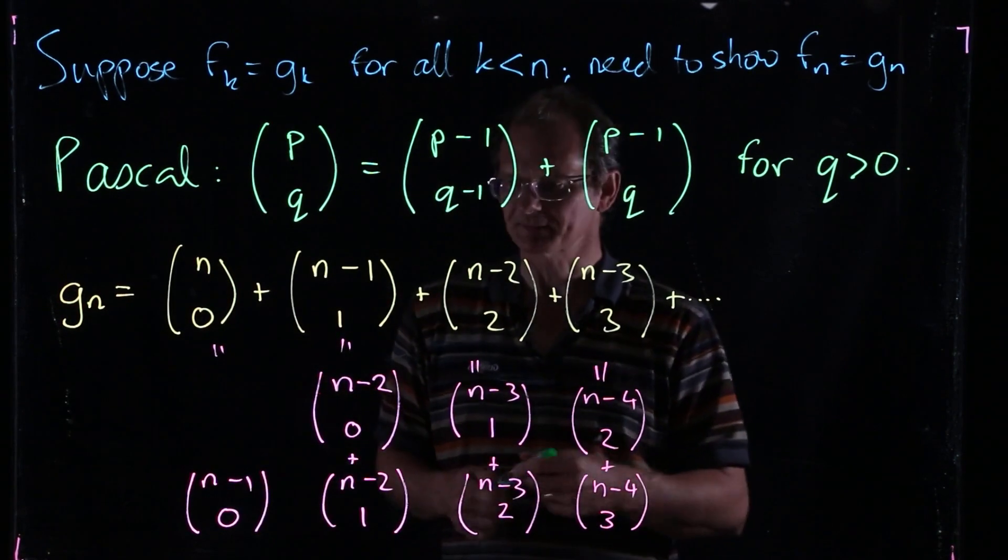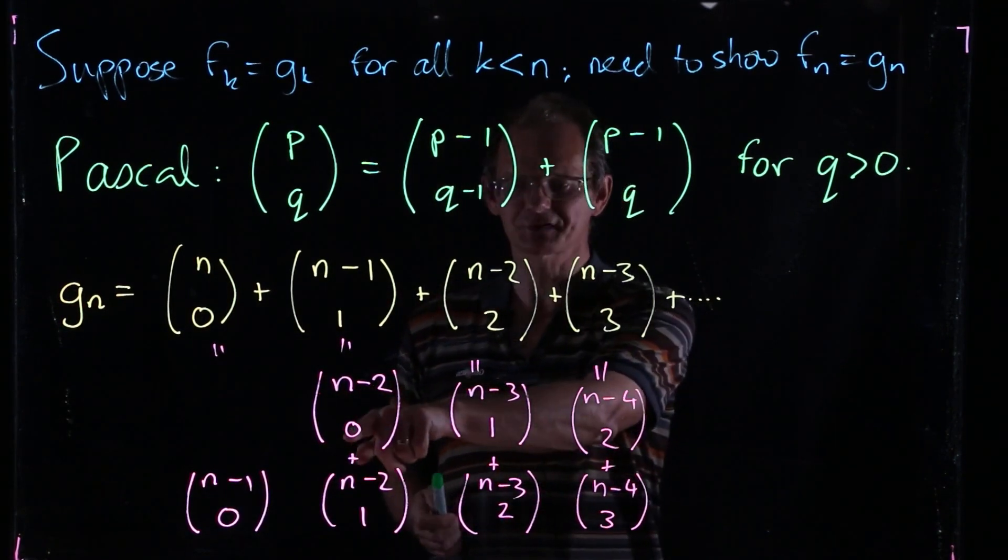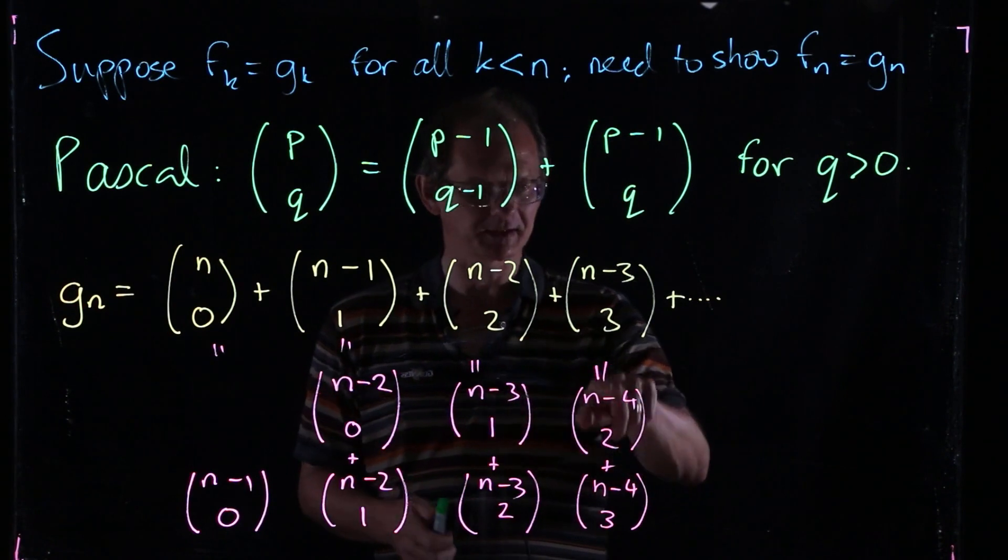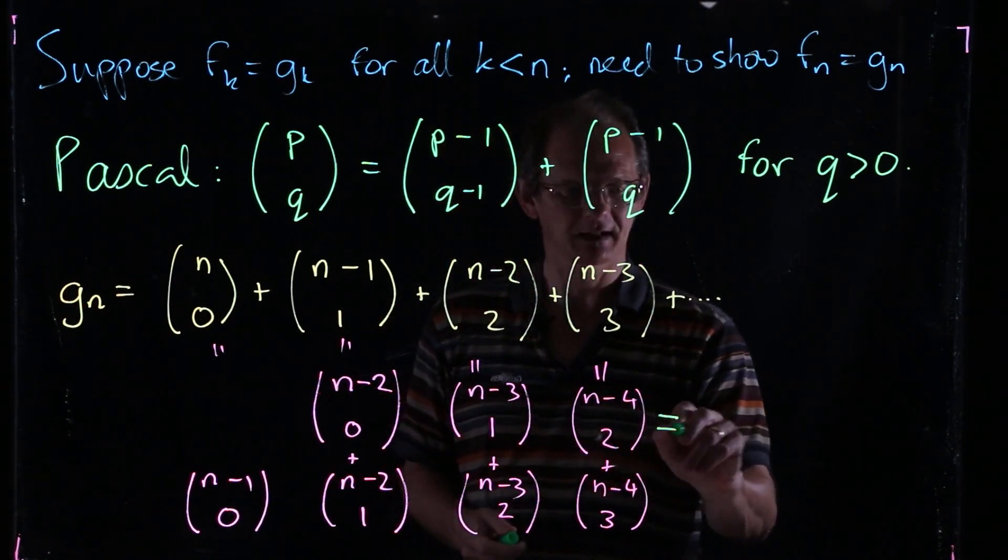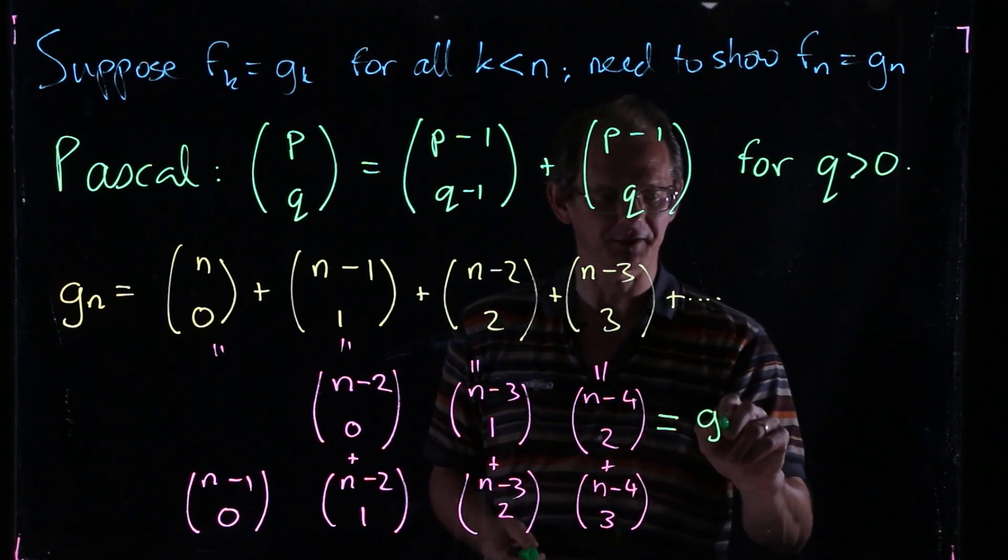And so what does that give us? Well let's look at what we've got here. n-2 choose 0, n-3 choose 1, n-4 choose 2, etc. So all this is just precisely our definition of Gn-2.